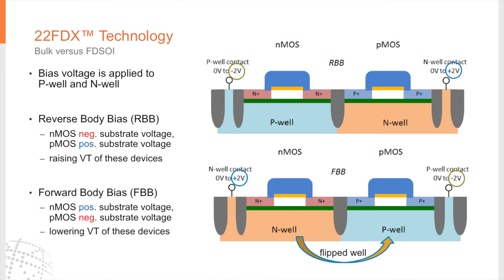On the other side we have the forward body bias device which uses a flip well, meaning we have NMOS on top of the N-well and PMOS on top of the P-well. We can play with the body bias voltage applied on the substrate to lower the threshold voltage of the device.